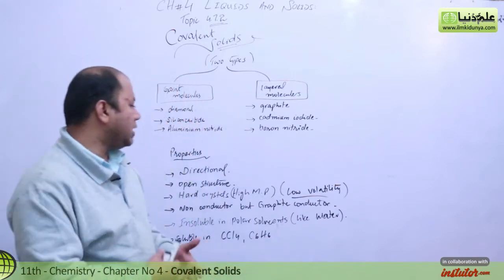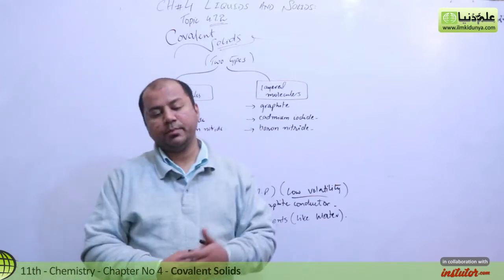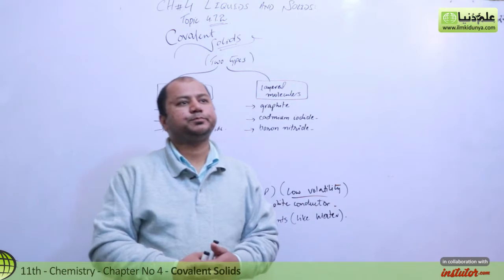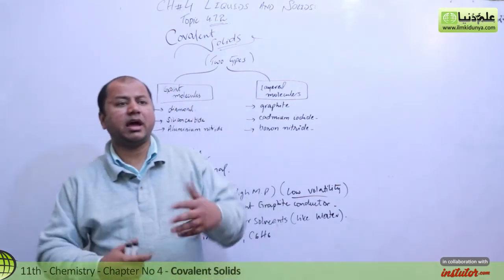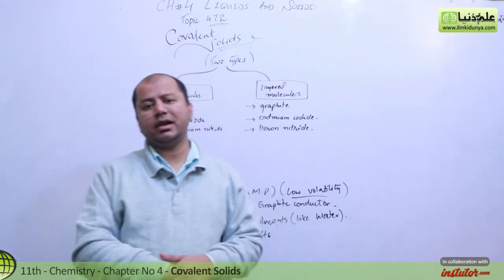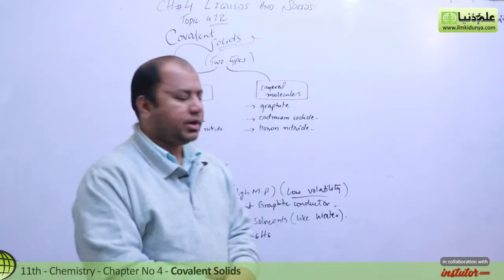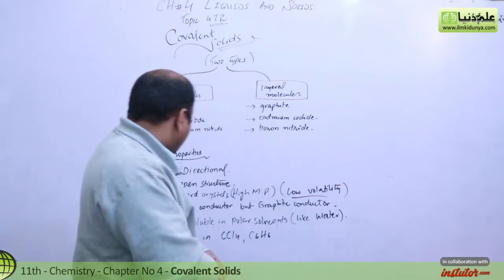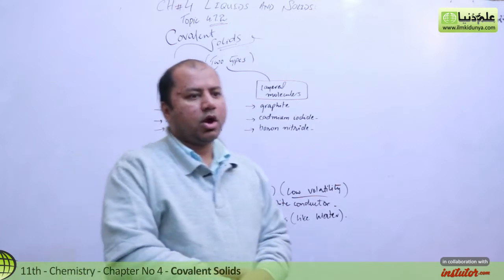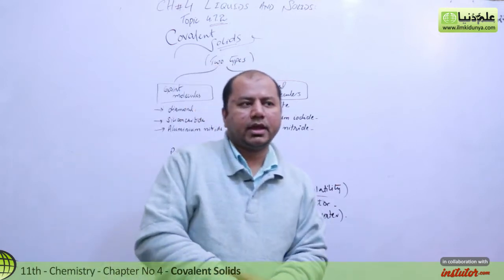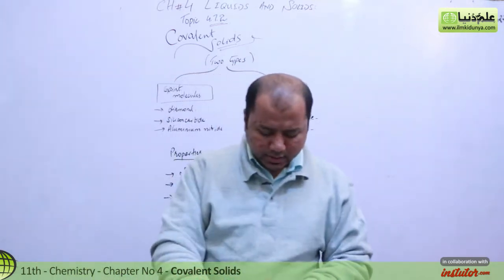These are hard crystals — covalent solids have high melting and boiling points, and they have low volatility, meaning they are not easily melted. Diamond is the hardest material. These are non-conductors because they have covalent bonds and don't show conductivity. However, graphite is a conductor.